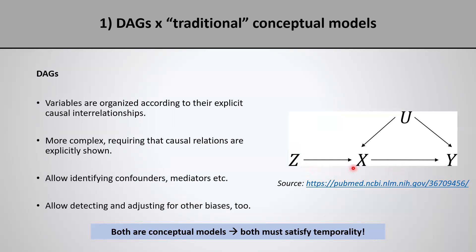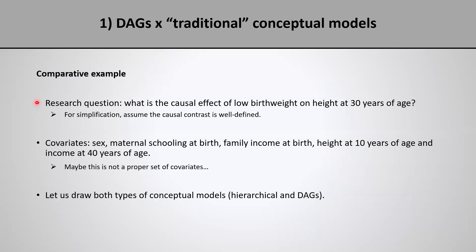Presence of an arrow between two variables indicates a direct causal relationship between them. Notice that both DAGs and traditional conceptual models are conceptual models — tools that we can use to summarize our knowledge and assumptions about the research question we are considering. Therefore, both of them must satisfy temporality. So to start gaining some understanding about DAGs, let's consider an example where we compare DAGs to more traditional conceptual models.